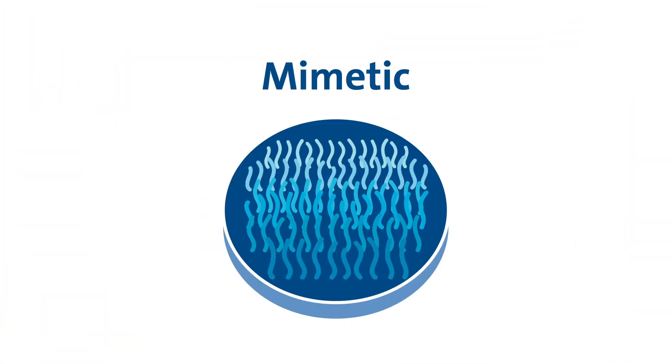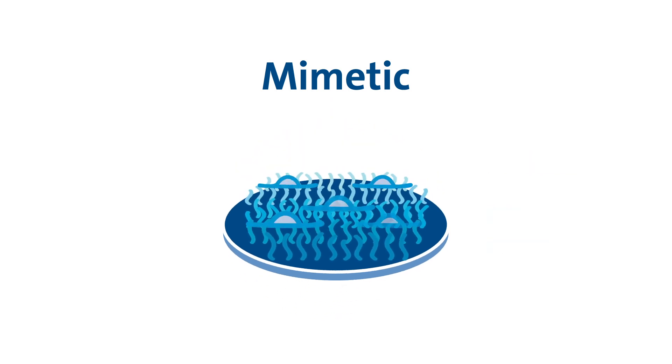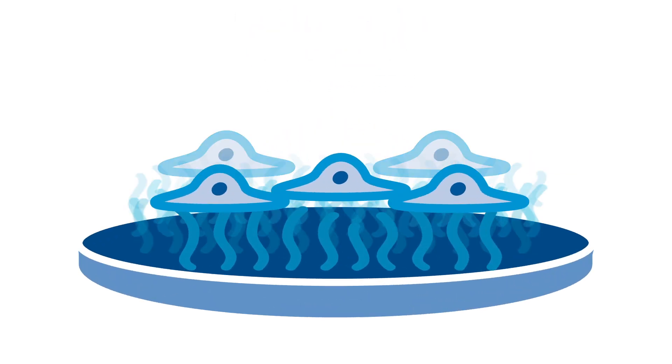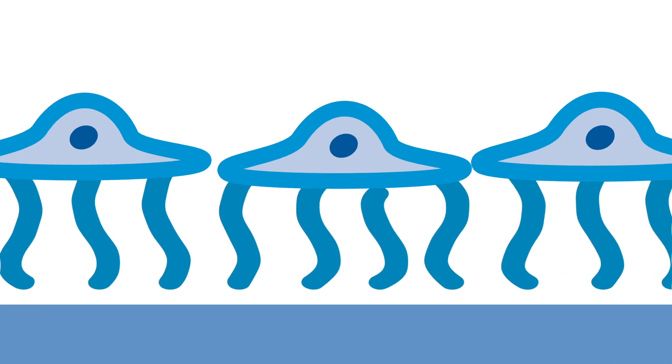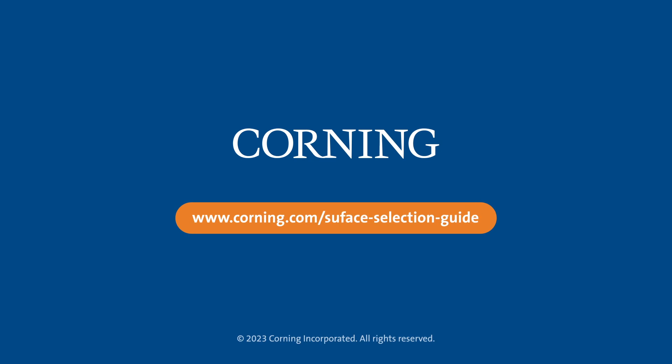Mimetic surfaces are synthetically active peptides that have been rationally designed to mimic the cell attachment process and motifs of native ECM proteins. Learn more about Corning cell culture surfaces at www.corning.com/surface-selection-guide.